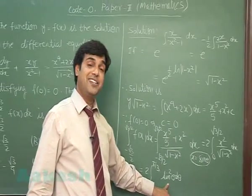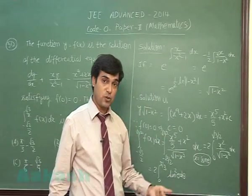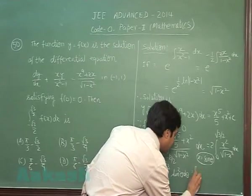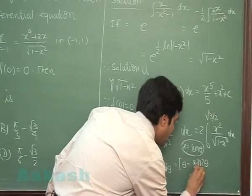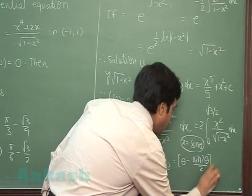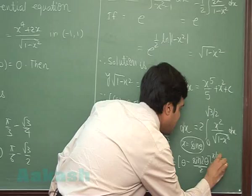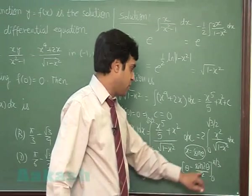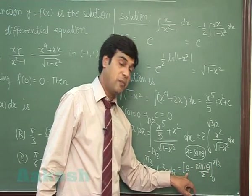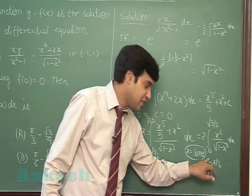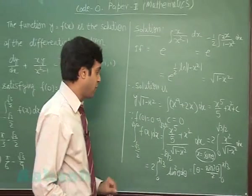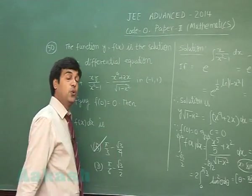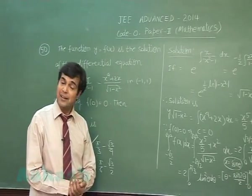Now, 2 sin² θ can be written as 1 minus cos 2θ and can be integrated: θ minus sin 2θ upon 2 limit 0 to π/3. On substituting π/3 to this term, we get π/3 minus root 3 by 4. On substituting 0, we get 0 only. So, the final result we obtain π/3 minus root 3 divided by 4. Correct?